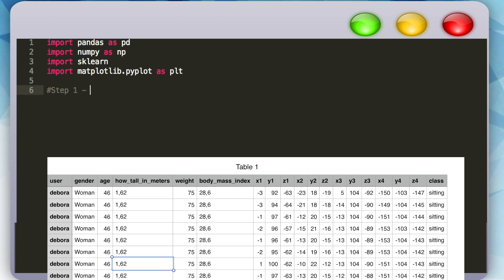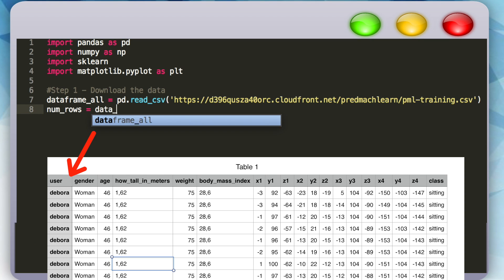Now that we've imported our dependencies, we can use pandas read CSV function to download that exercise data set directly from the web and store it in the data frame variable. And we'll also create a variable to store the number of rows in the data by calling the shape function on the zeroth column to get the count of rows.